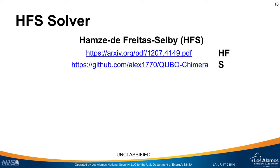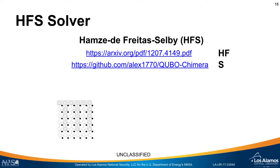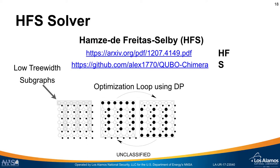The HFS solver was proposed in a particular arXiv report and implemented by Shelby in a GitHub repository. Essentially you start with a graph of a particular structure and design low-treewidth subgraphs — roughly a comb shape with very low treewidth. You use dynamic programming, which scales polynomially in the treewidth. You optimize one subgraph, get the best configuration, then pick another subgraph and optimize it, iterating back and forth until you hit a time limit or convergence criteria.